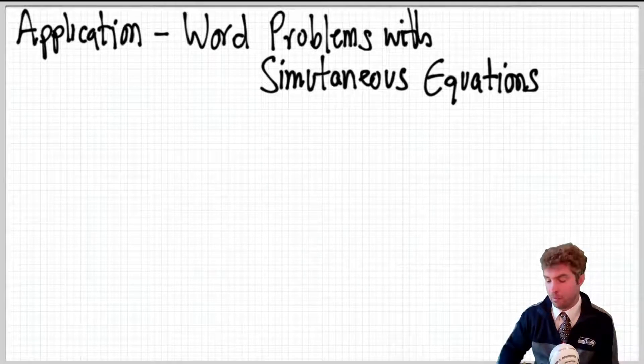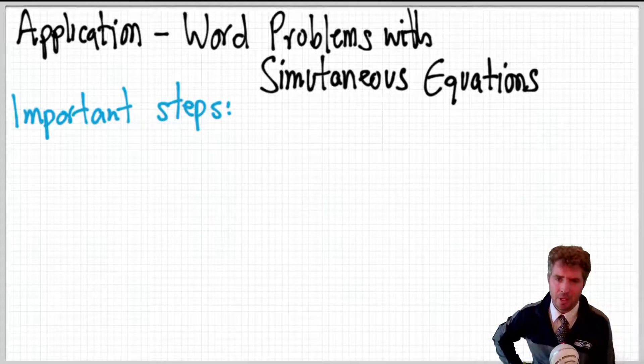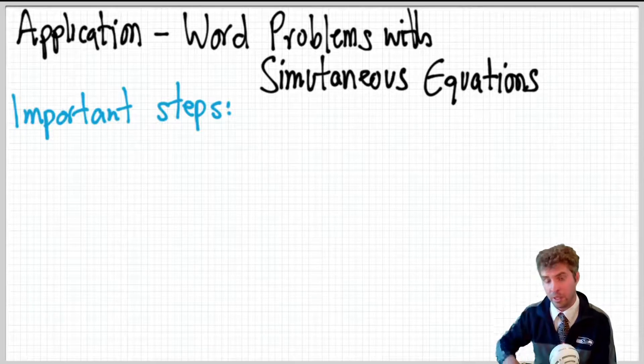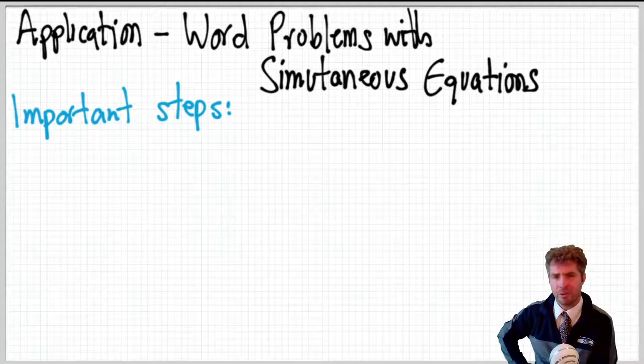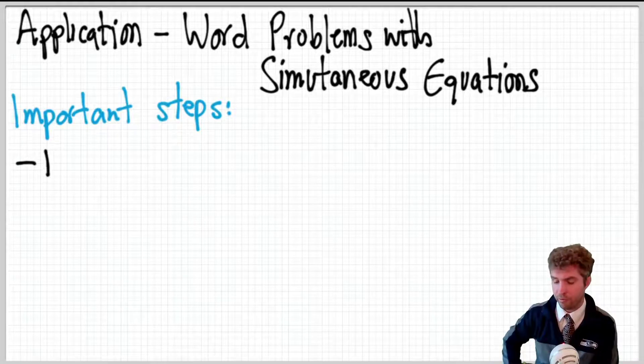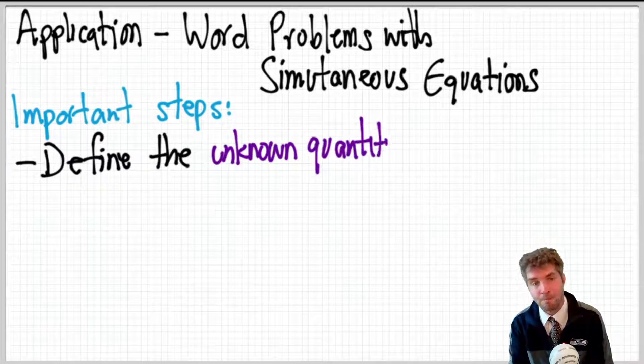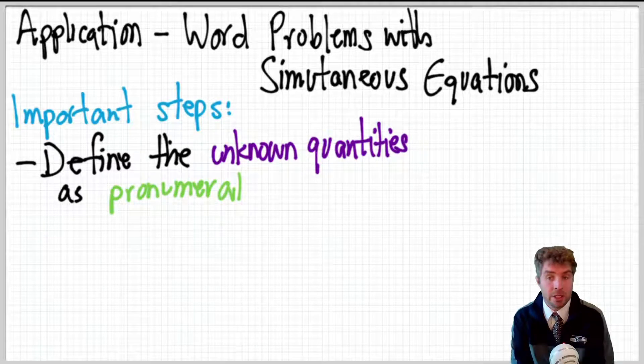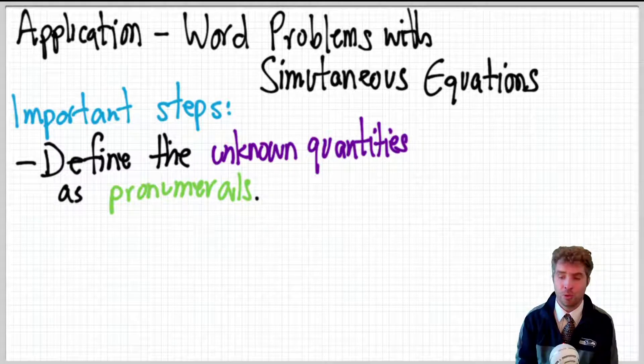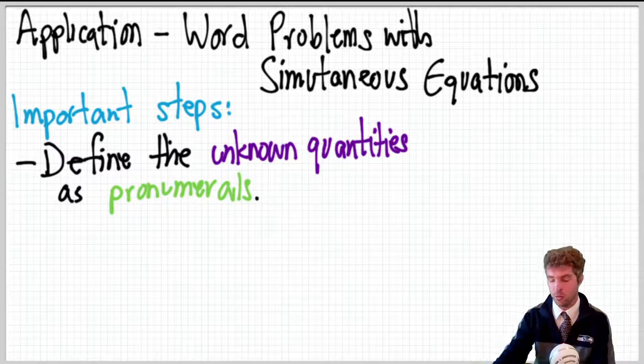So, there are some hot tips, some very important suggestions, some steps that are really important when you're solving a word problem in general, but especially as well with simultaneous equations. Let's look, first step. The first step to word problems is to define, especially with algebra, define the unknown quantities, quantity or quantities. With simultaneous equations, it's going to be multiple quantities. We need to define them as pronumerals or variables, so letters or symbols that we're going to use to represent these unknown quantities.